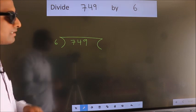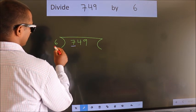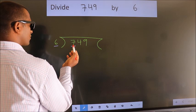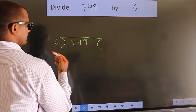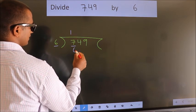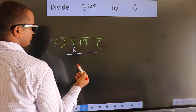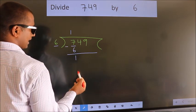Next. Here we have 7, here 6. A number close to 7 in 6 table is 6 ones, 6. Now we should subtract. We get 1.